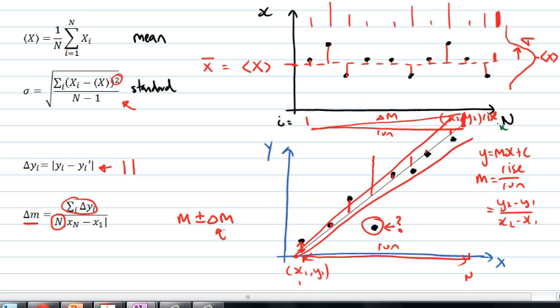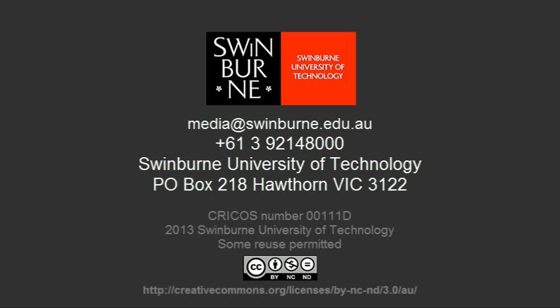And this delta m tells us how those data points are distributed about the slope.